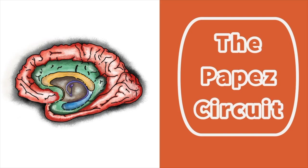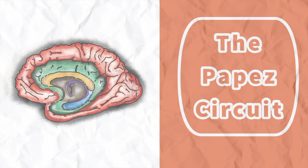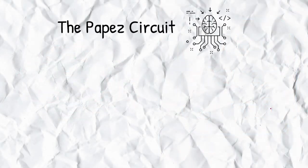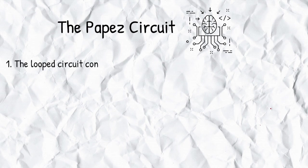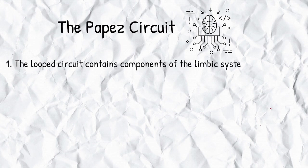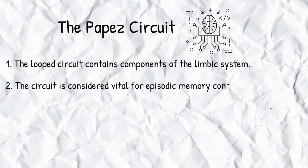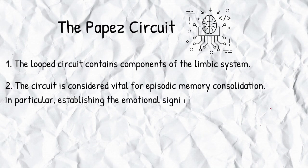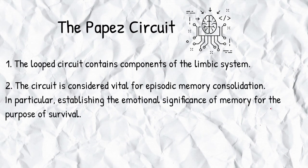Hello and welcome to SOT and Brain Hub. My name's Charlotte and today I'll be talking you through the Papez circuit. The Papez circuit is a loop within the brain that contains some of the components of the limbic system. The circuit is considered vital for episodic memory consolidation, in particular establishing the emotional significance of memory for the purpose of survival.